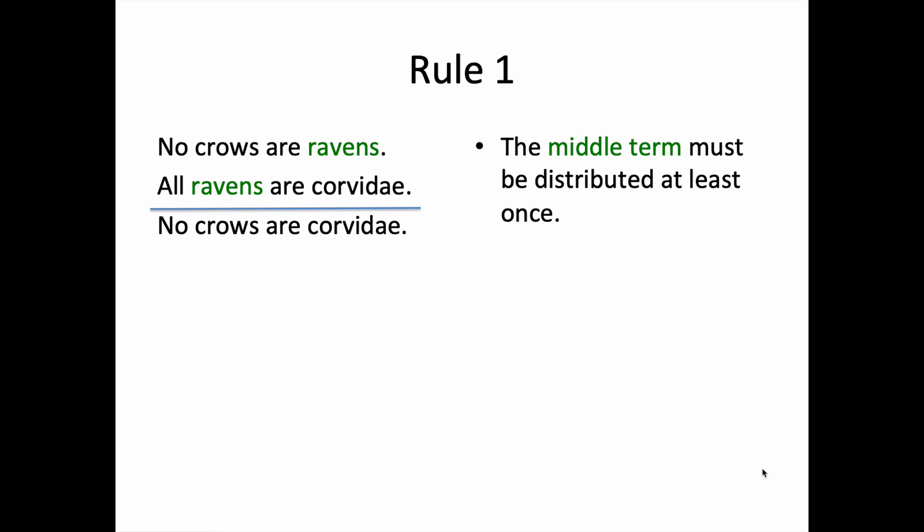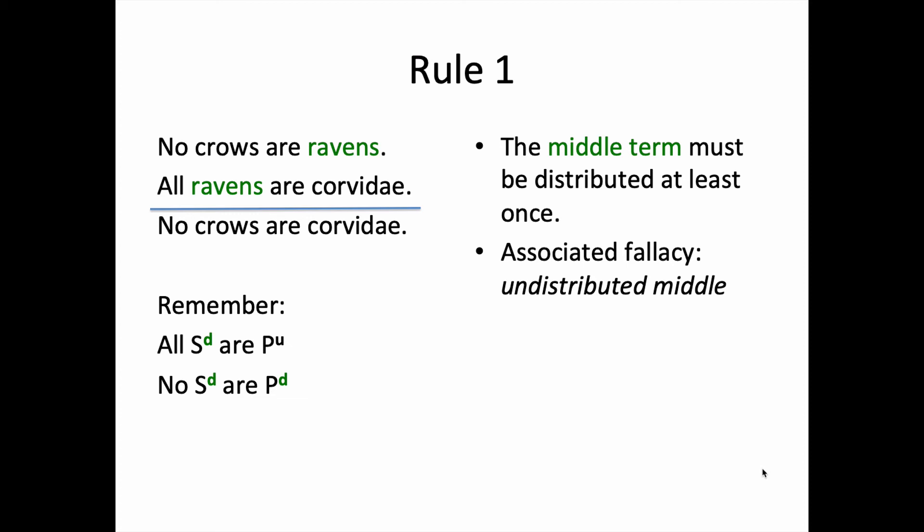Remember, the universal negative and the universal affirmative each distribute the subject class, but only the universal negative distributes the predicate class. So long as ravens is distributed in one of the premises, rule number one is satisfied — it doesn't have to be distributed in both. Looking at the major premise, ravens is distributed. It also happens to be distributed in the minor premise. If rule number one were broken, the associated fallacy would be the undistributed middle — the argument would be invalid and the error is called undistributed middle.